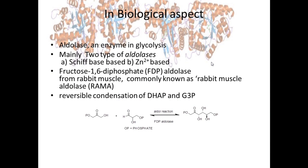The biological aspects of aldol condensation: the aldolase enzyme used in glycolysis also performs aldol condensation. Enzymes are classified by mechanism — Schiff-base (type I) and zinc-based (type II) enzymes. Fructose-1,6-bisphosphate (FDP) aldolase, isolated from rabbit muscle — commonly known as rabbit muscle aldolase — catalyzes the reversible condensation of dihydroxyacetone phosphate and glyceraldehyde-3-phosphate to give the six-carbon aldol product in glycolysis.